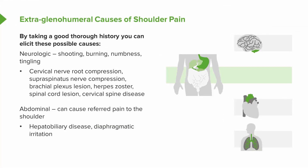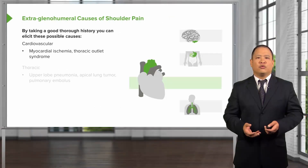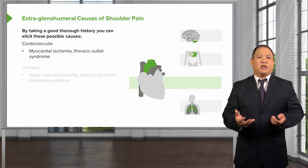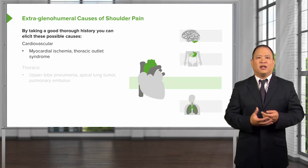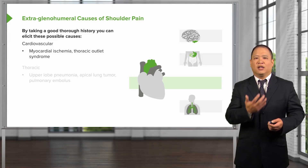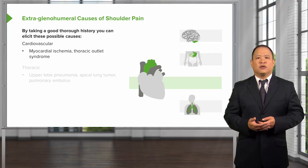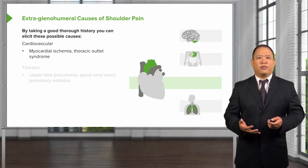Patients complaining of shoulder pain may also have pain referred from the abdominal region. Issues with the gallbladder, the stomach, and the diaphragm can irritate the organs and send referred pain to the shoulder. This is also true for cardiac issues. If someone has a cardiac event, it may radiate pain to the left shoulder and jaw, so you always have to rule out a potential cardiac issue when someone presents with shoulder pain.